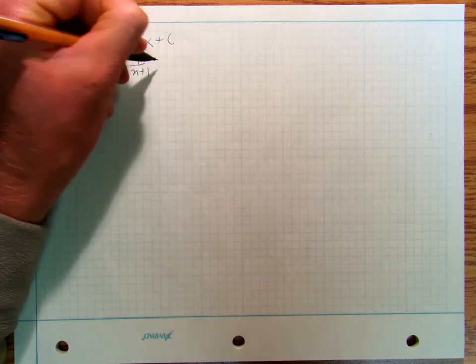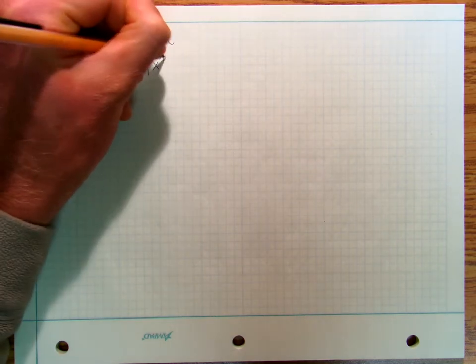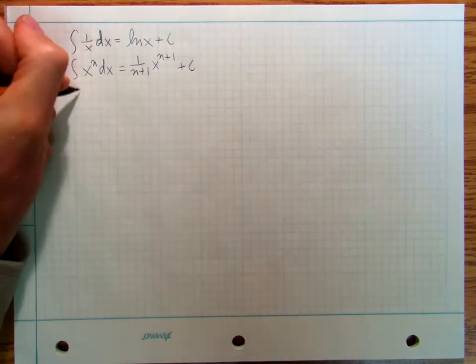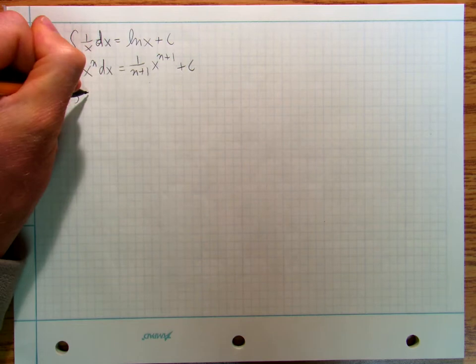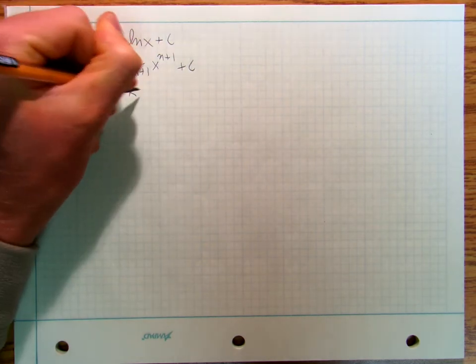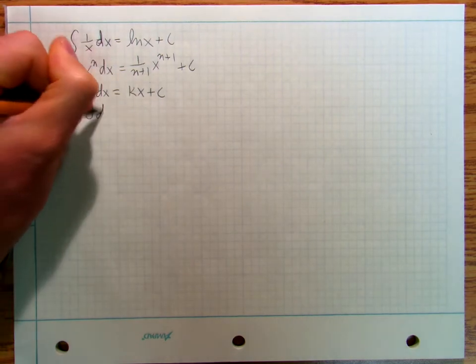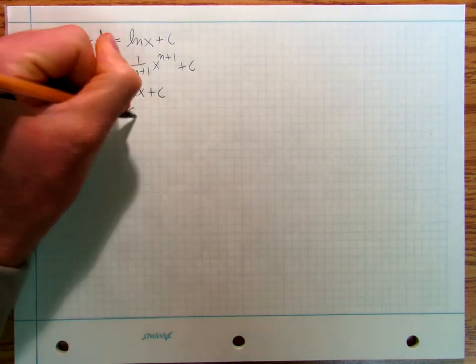Integral of x to the n dx equals 1 over n plus 1, x to the n plus 1 plus c. But then we've got integral of k dx is equal to kx plus c. Integral of 0 dx is going to be c.